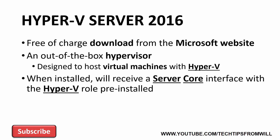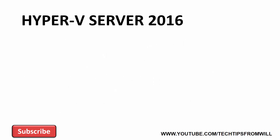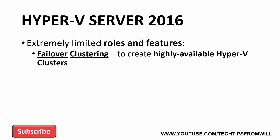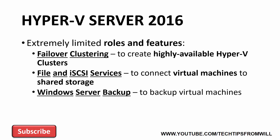All the administrator has to do is configure the role. Since there is no Desktop Experience interface available, all local administration of Hyper-V Server 2016 is done by the command line and by using Windows PowerShell. Since Hyper-V Server 2016 is nothing more than a hypervisor, it comes with an extremely limited set of roles and features. The only roles and features that can be installed are those that integrate with Hyper-V, such as failover clustering to create highly available Hyper-V clusters, file and iSCSI services to connect virtual machines to shared storage devices, and Windows Server Backup.